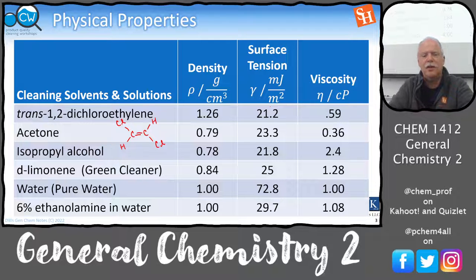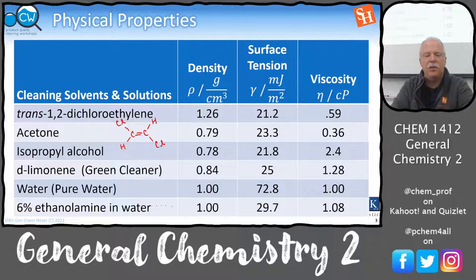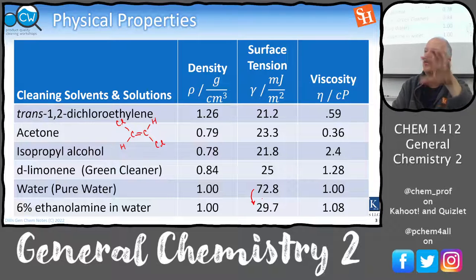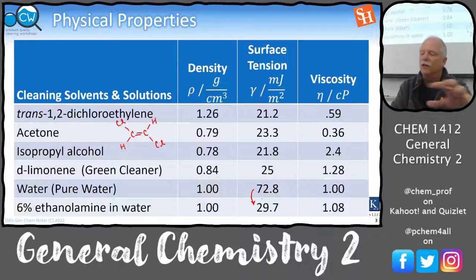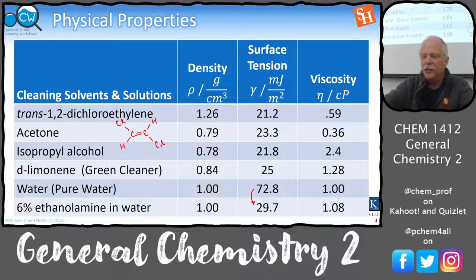What about soap? Down here we have water, and if you add just a little bit of a surfactant — ethanolamine — to water, it doesn't change the density much. But look what happens to the surface tension: it drops a lot. That's what soap is doing — it's lowering the barrier to creating more surface. That allows water to wet the surface when you add soap, and it doesn't change the viscosity very much either.